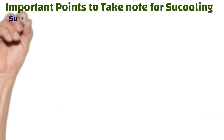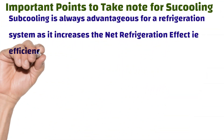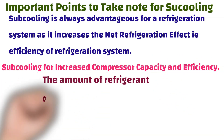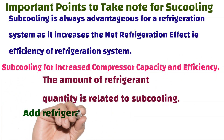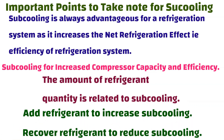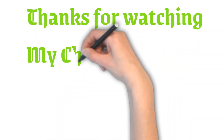Important points to note: sub-cooling is always advantageous for a refrigeration system as it increases the net refrigeration effect, which is the efficiency of the refrigeration system. Sub-cooling also increases compressor capacity and efficiency. The amount of refrigerant is related to sub-cooling — add refrigerant to increase sub-cooling, and recover refrigerant to reduce sub-cooling. Thank you all, please like, comment, and share my channel with your friends.